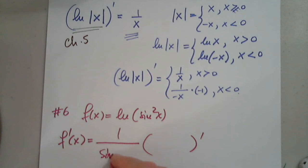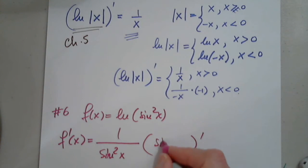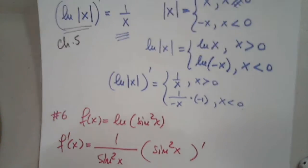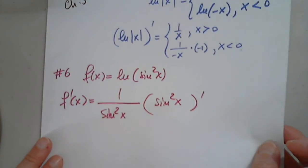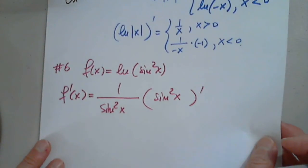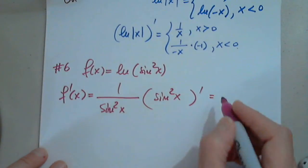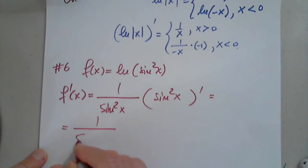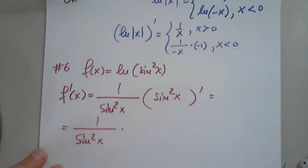So I have 1 over sine squared x times sine squared x prime — that is, 1 over sine squared x times the derivative of the inner function.